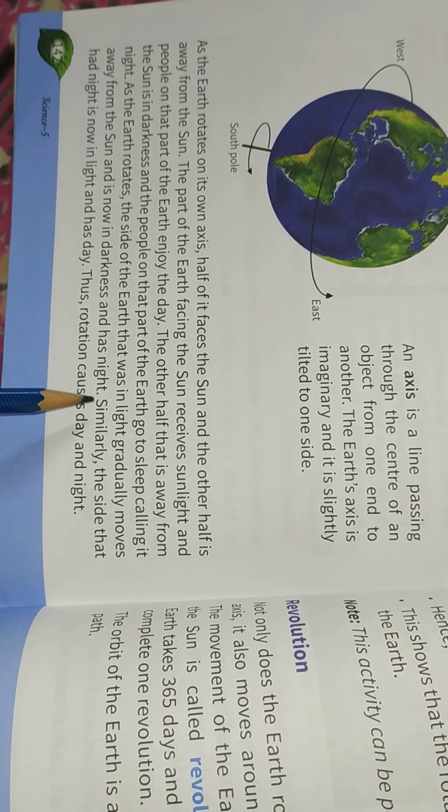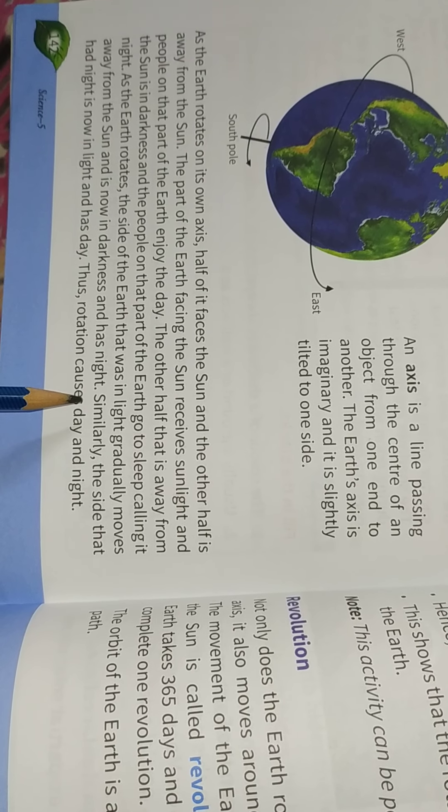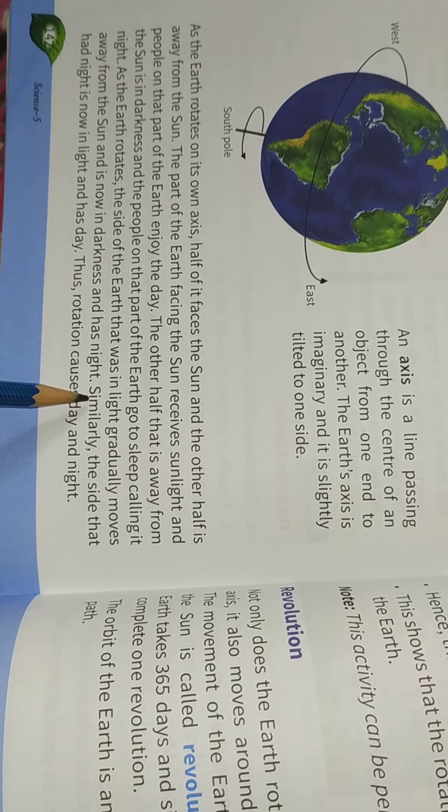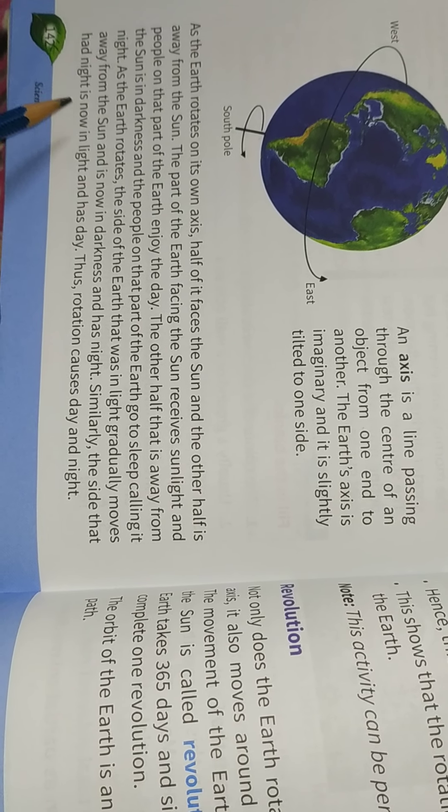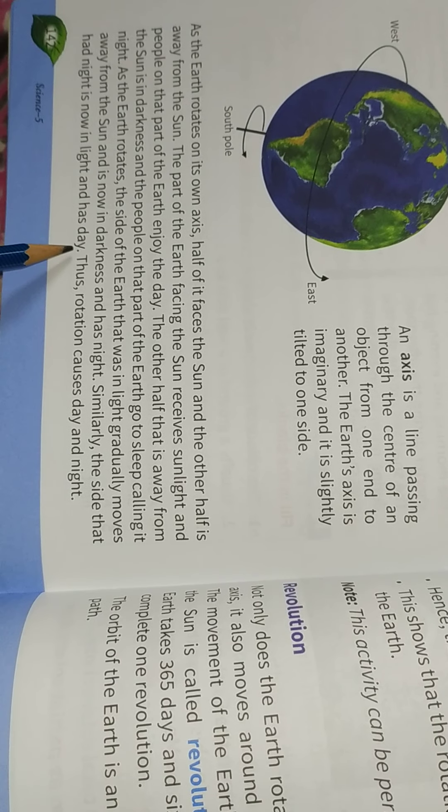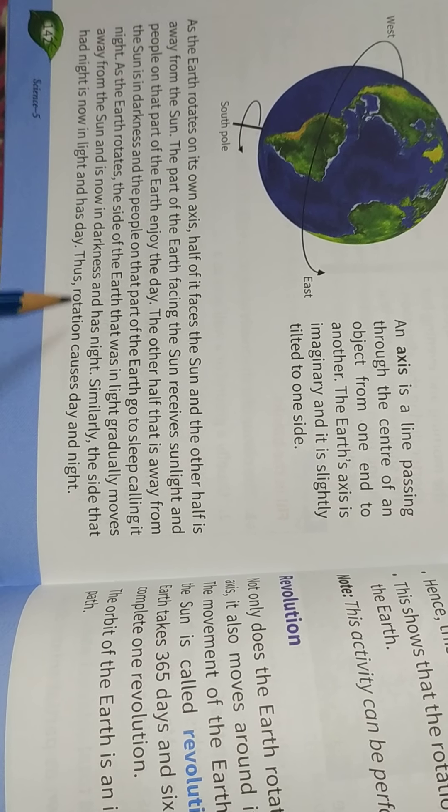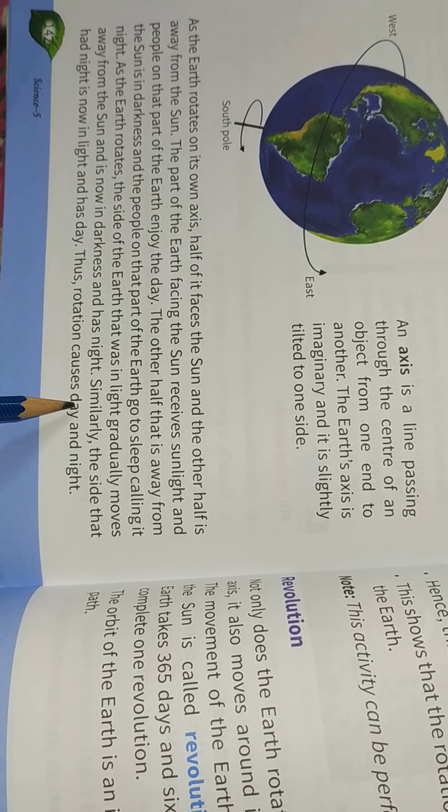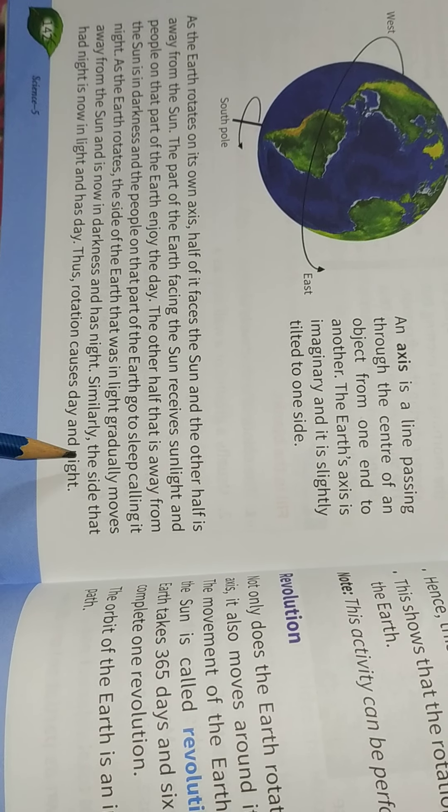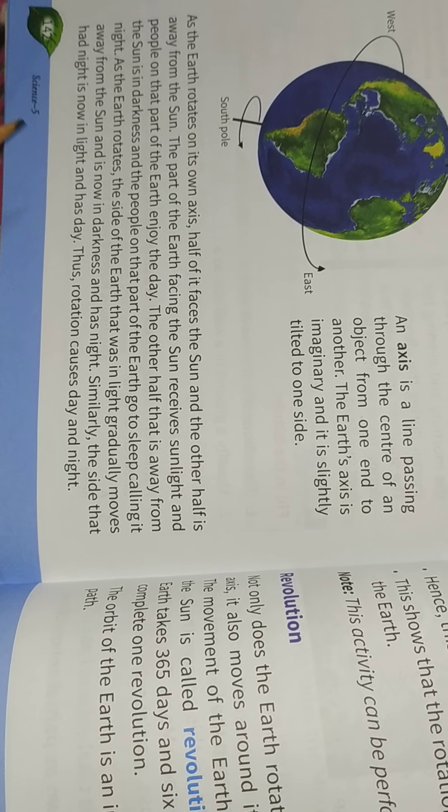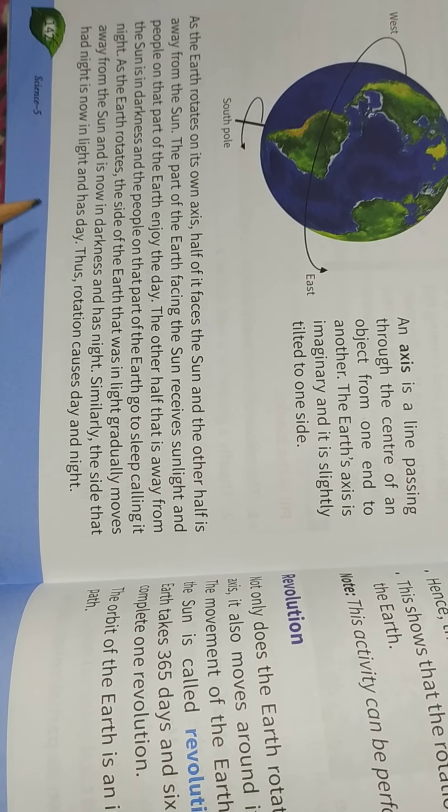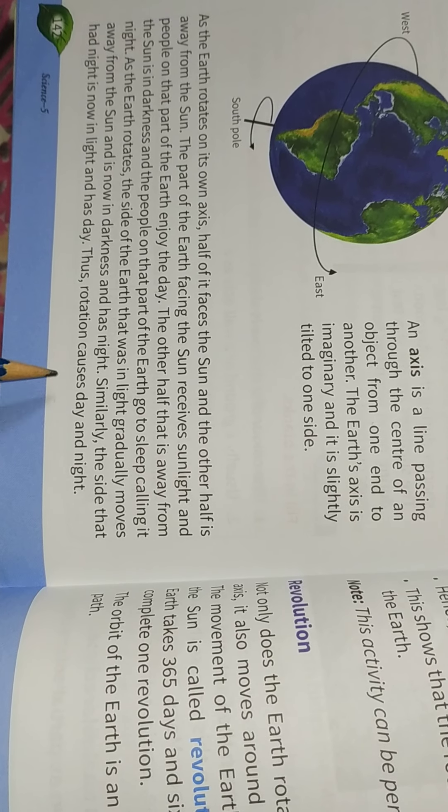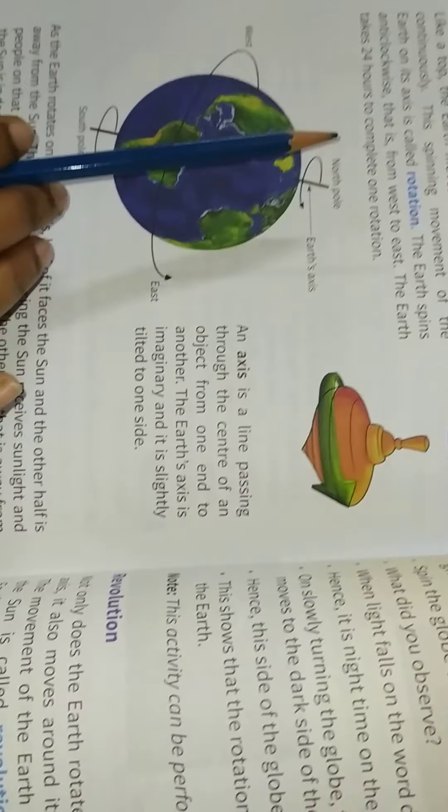This side is the light which gradually moves away from the sun and the dark side of the sun. This portion is the darkness and night. Similarly, the rotation causes the day and night.